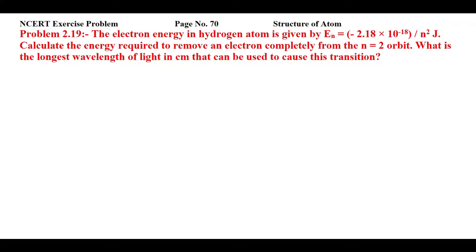Students, this is NCRT exercise problem 2.19 from page number 70 of Structure of Atom. The electron energy in hydrogen atom is given by E subscript n equal to minus 2.18 into 10 raised to power minus 18 by n square joule. Calculate the energy required to remove an electron completely from the n equal to 2 orbit. What is the longest wavelength of light in centimeter that can be used to cause this transition?